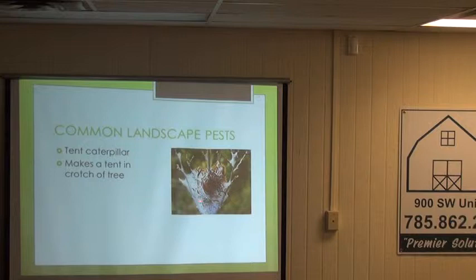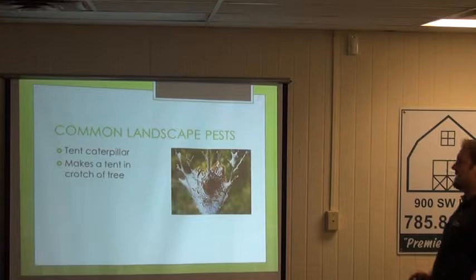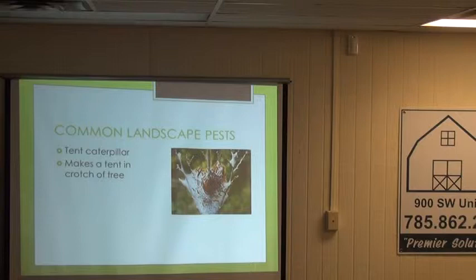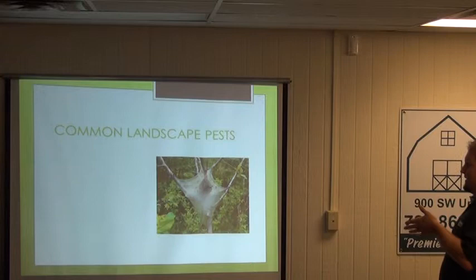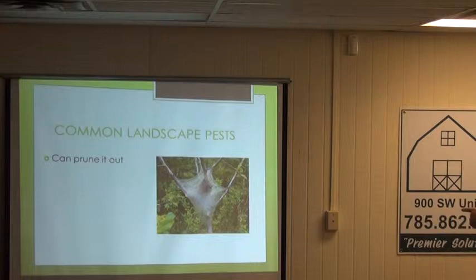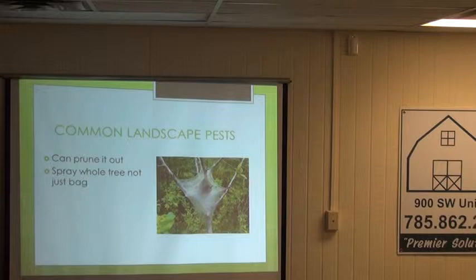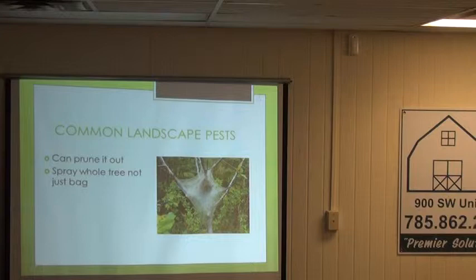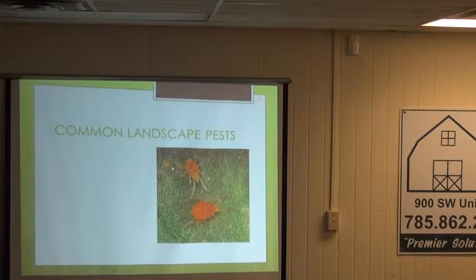Tent caterpillars look similar to webworms but are different. They find a crotch in the tree and make a tent, leaving to feed during the day and returning at night for refuge. Pruning out the tent works if it's a side branch, but it's impractical if it's at the center of the tree. The bag itself is nearly impossible to penetrate with insecticide, so spray the whole tree so caterpillars contact insecticide when they come out to feed. Spinosad, bifenthrin, and permethrin are all effective.